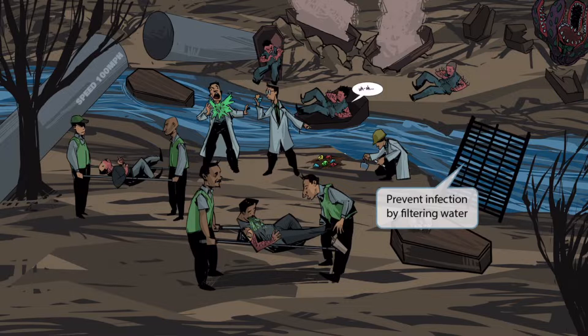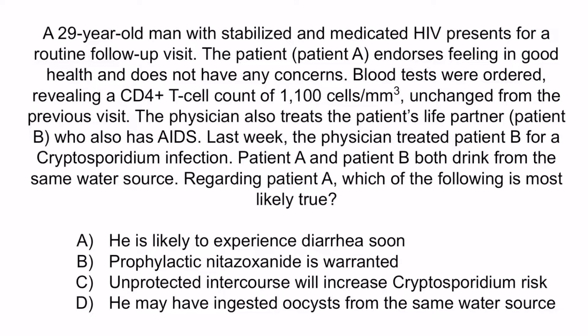Now let's do a question to apply this. A 29-year-old man with stabilized and medicated HIV presents for a routine follow-up visit. Patient A endorses feeling in good health and has no concerns. Blood tests reveal a CD4 T cell count of 1,100 cells per cubic millimeter, unchanged from the previous visit. The physician also treats the patient's life partner, patient B, who also has AIDS. Last week, the physician treated patient B for a cryptosporidium infection. Patient A and patient B both drink from the same water source. Regarding patient A, which of the following is most likely true? A: he is likely to experience diarrhea soon. B: prophylactic nitazoxanide is warranted. C: unprotected intercourse will increase cryptosporidium risk. Or D: he may have ingested oocysts from the same water source.